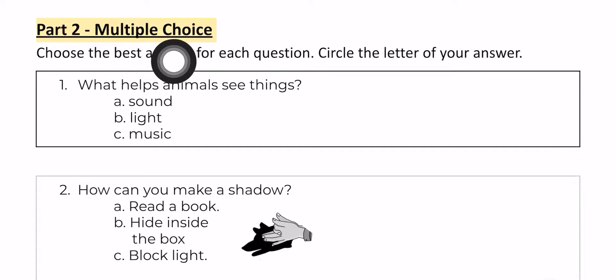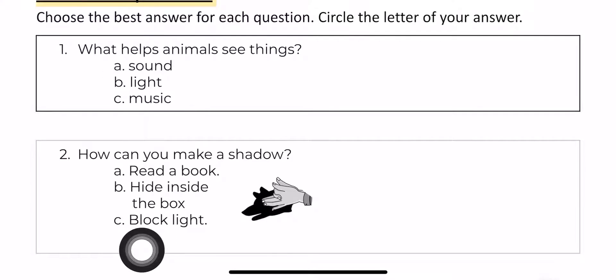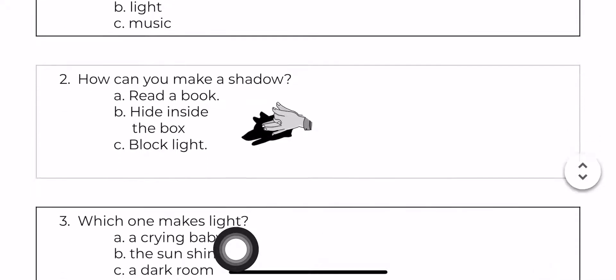Multiple choice. Choose the best answer for each question. Circle the letter of your answer. Number two, how can you make a shadow? A. Read a book. B. Hide inside the box. C. Block light. How can you make a shadow?